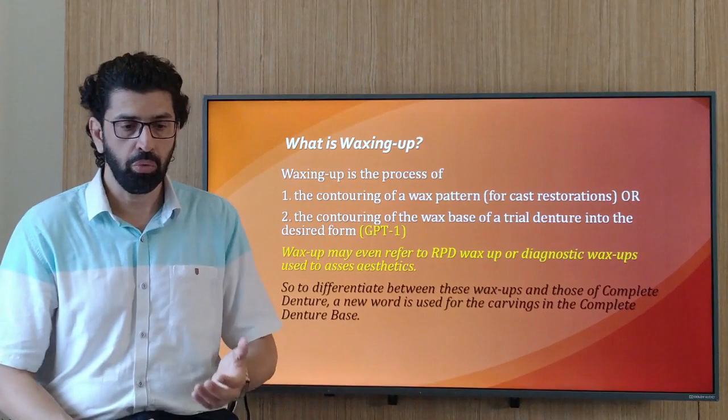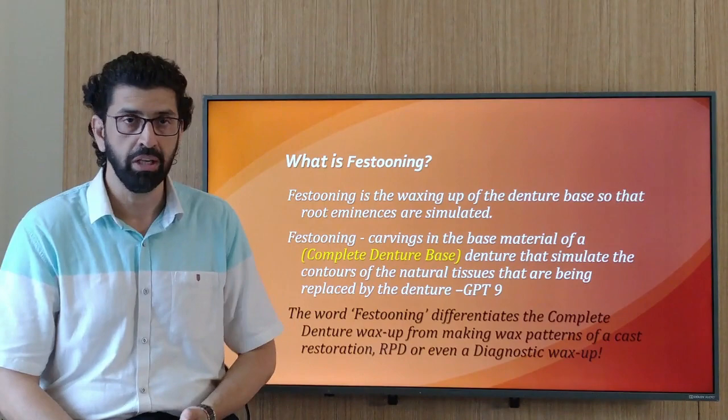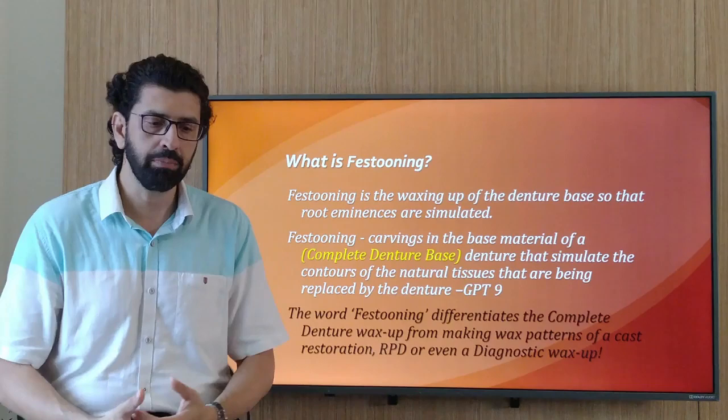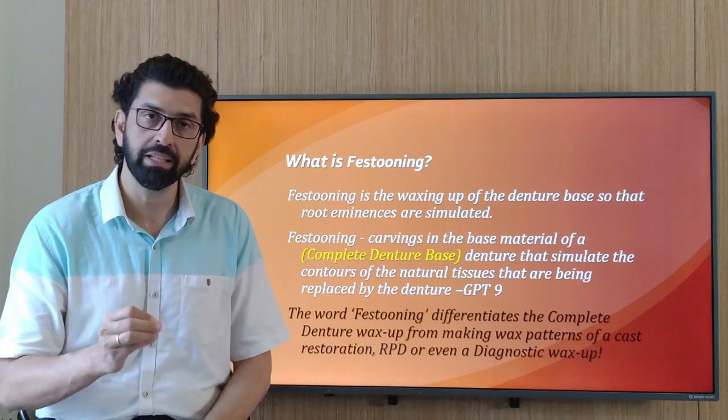Because wax up can refer to so many different things, over the years the definition has become more differentiated, and by the time we get to GPT-9, it introduces the word festooning. GPT-9 describes it as "carvings of the base material of a denture that simulate the contours of the natural tissues being replaced by the denture."